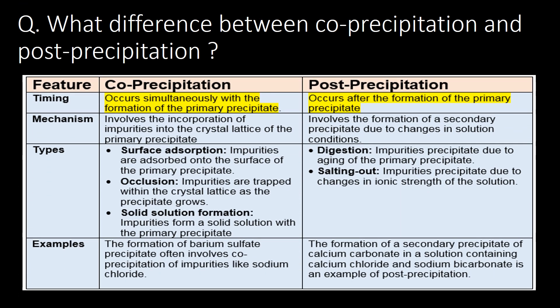Co-precipitation and post-precipitation are both important concepts in gravimetric analysis. What is the difference between co-precipitation and post-precipitation? With the following features we can differentiate between them. The important feature is timing: co-precipitation occurs simultaneously with the formation of the primary precipitate, whereas post-precipitation occurs after the formation of the primary precipitate.